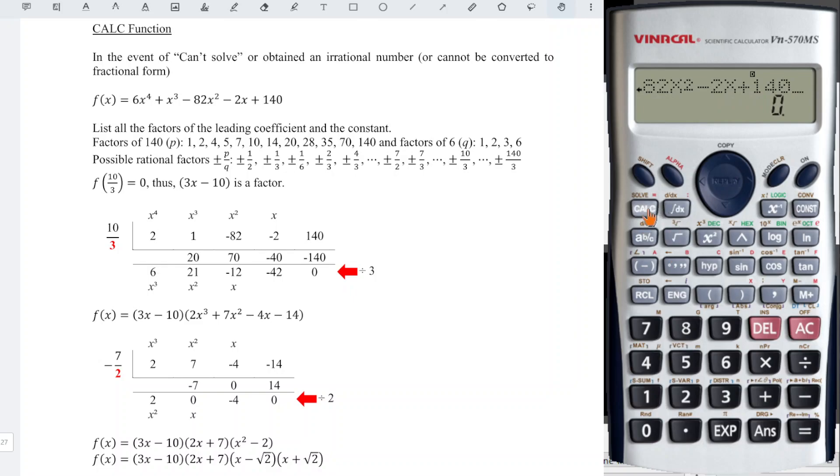We just have to make use of the calculate button and input the factor that we think is possible. If we think that 1/2 might be the value, we put 1/2 and press equal. Unfortunately, the value that we obtain is not zero.